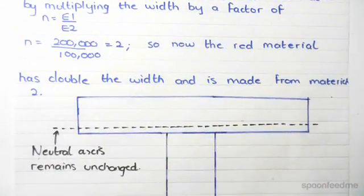And now the location of the neutral axis over here is still approximately the same. Now, what's the benefit of having a transformed section?